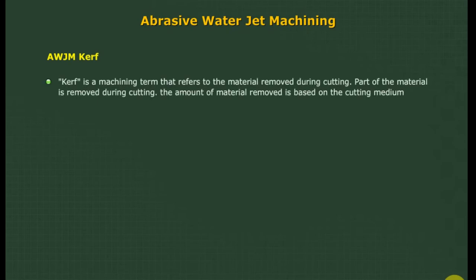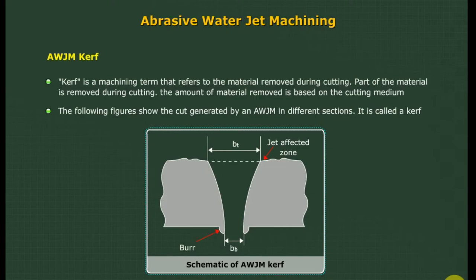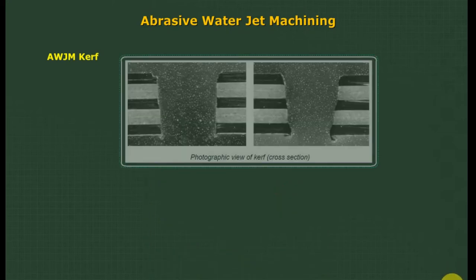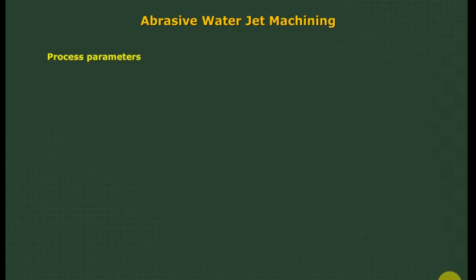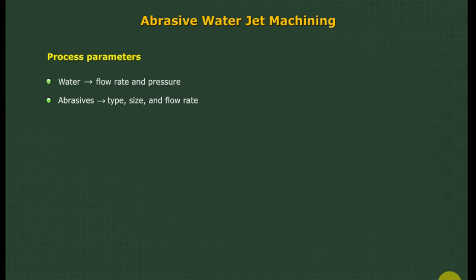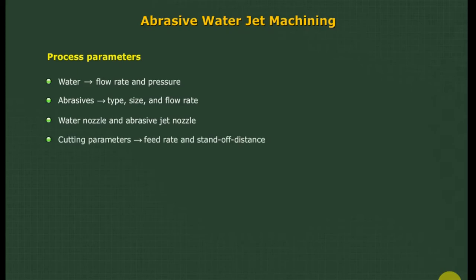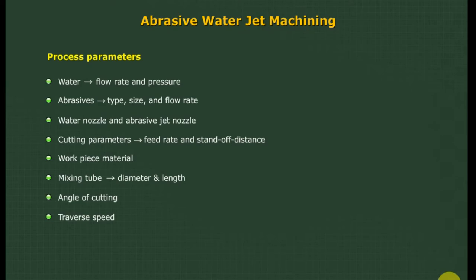AWJM kerf: kerf is a machining term referring to the material removed during cutting. The amount of material removed is based on the cutting medium. Parameters which affect the performance of an AWJM process are: water flow rate and pressure; abrasives — type, size, and flow rate; water nozzle and abrasive jet nozzle design; cutting parameters including feed rate and standoff distance; and workpiece material. Other cutting parameters include mixing tube diameter and length, angle of cutting, and traverse speed.